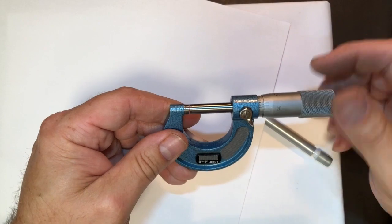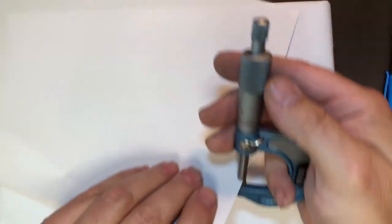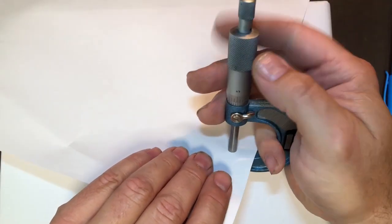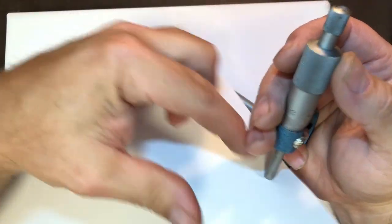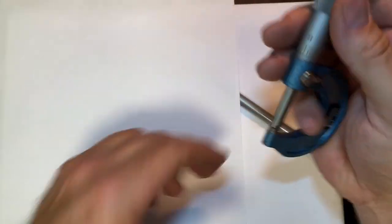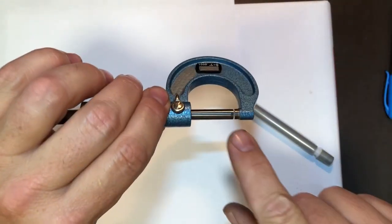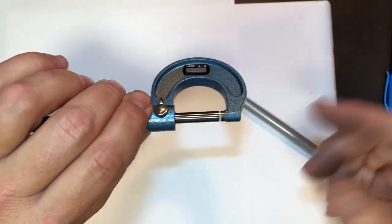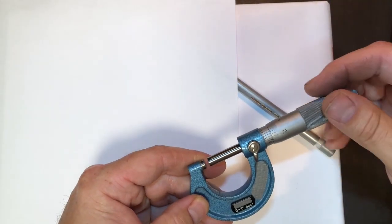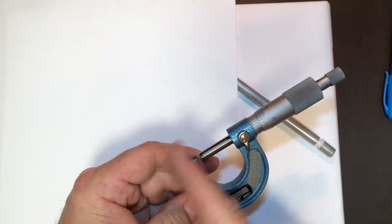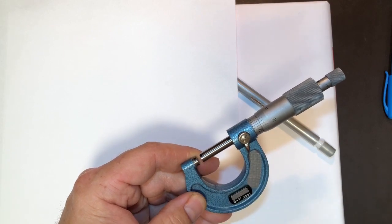That did two things for me. I could feel the compression on the paper. And if it would have ripped on this side or that side, I would know the anvil is out of alignment. You can also use optical blocks or optical flats to check the alignment between the anvil and the spindle.